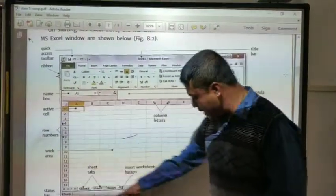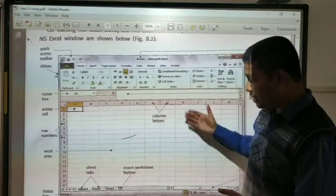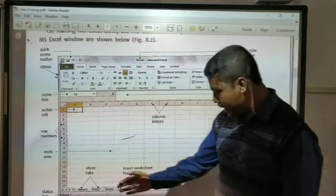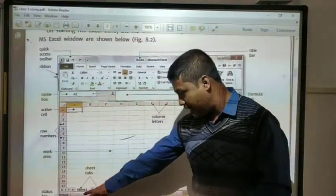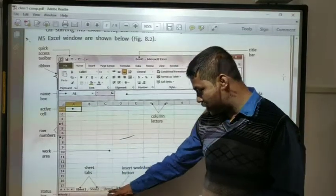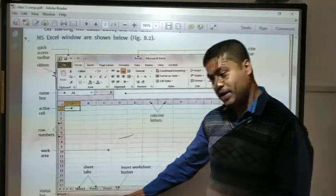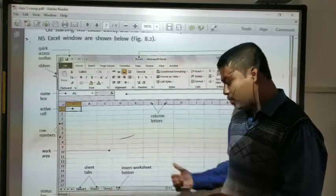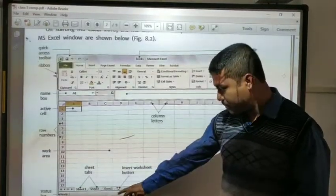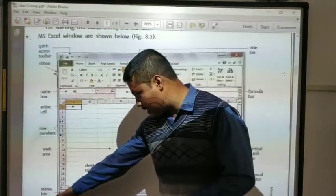Then these are the row numbers and these are your column numbers. And inside this, the table part, this is called as a work area. And below you will be getting sheet tabs like Sheet 1, Sheet 2, Sheet 3. Before, only 3 sheets appear. And if you want to insert more sheet, you can use this button. And at the last, you will be getting the status bar. That means whether your work is ready or not.